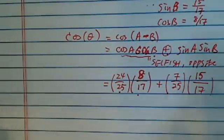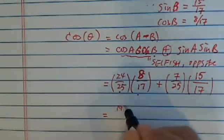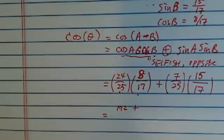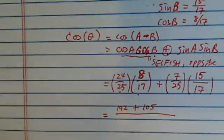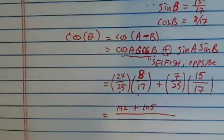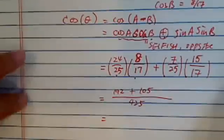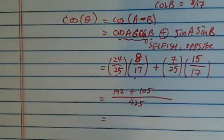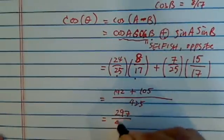Now, most teachers probably want you to simplify a little bit more. So 24 times 8, what I have is 192, plus 15 times 7, I have over here is 105. And then this big, long 25 times 17 over here, I have 425. So let's just simplify a little bit more. 192 plus 105 on top, so I have 297 over 425.